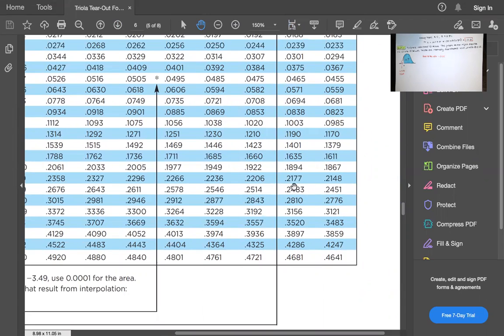Now 0.2483 is 0.0017 from 0.25, and 0.2514 is 0.0014 from 0.25. So this is the closest one we've got right here.